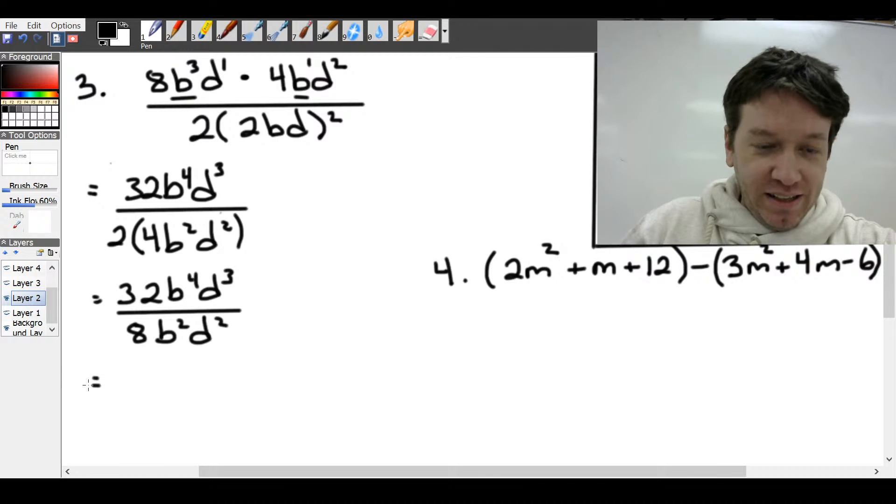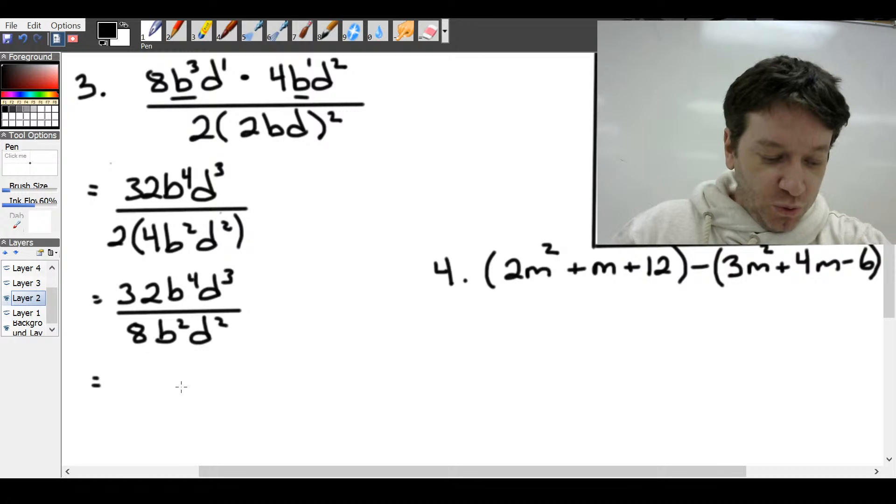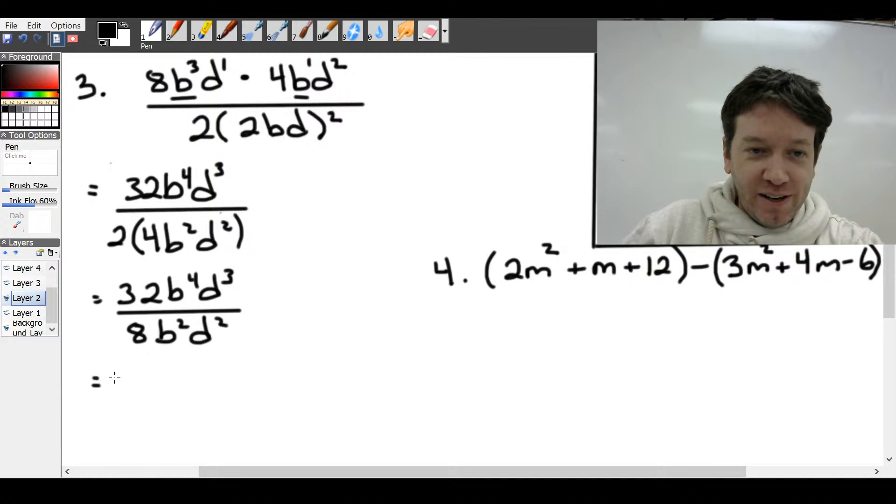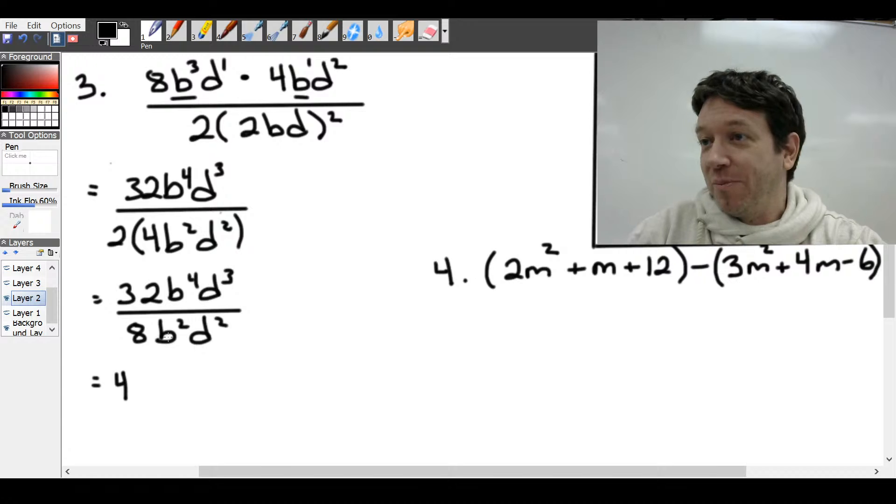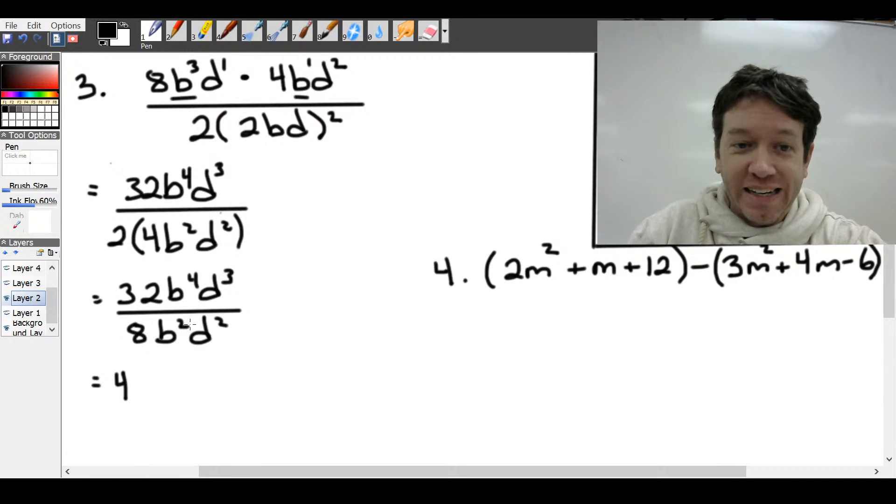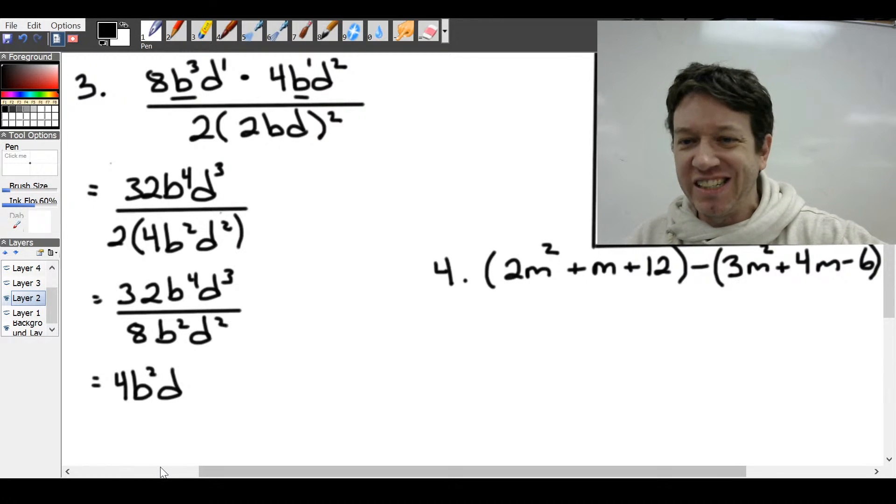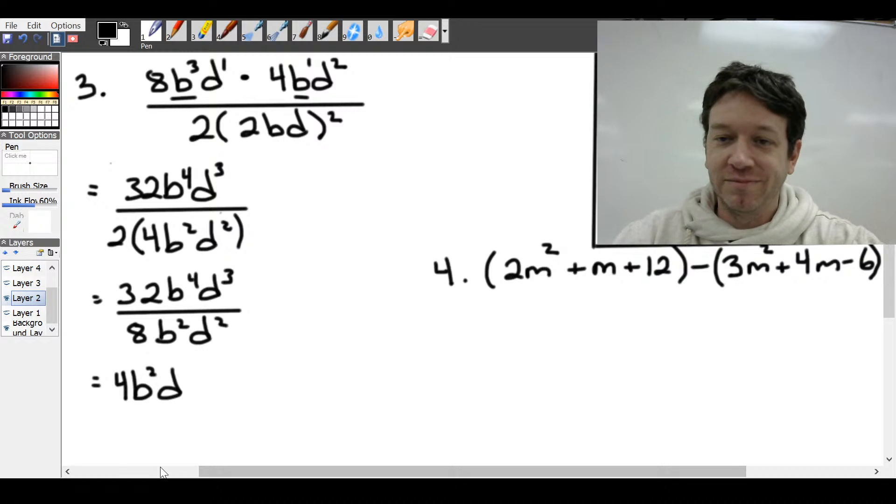All right. So 32 divided by 8 is 4. And now when we are dividing common bases, you subtract the exponents. So 4 minus 2 is 2. So we got b squared. And 3 minus 2 is 1. So d to the power of 1 or just d. All right. Let's try this one.